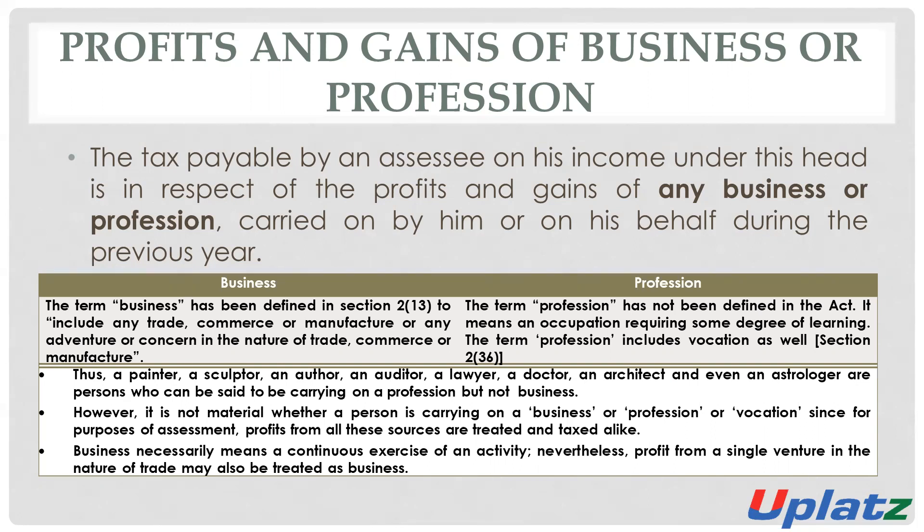Profession means the definition of profession is not explicitly defined in the Income Tax Act, but profession means an occupation. It is an occupation which is arrived at after acquiring some degree of learning. Profession includes vocation as well — vocation is also considered as profession. In the case of profession, if there is any person who wants to be a professional, then a particular professional degree is required.